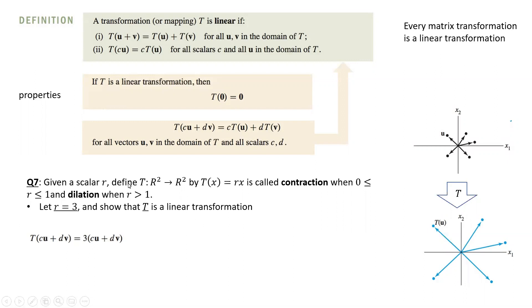By the definition of our transformation, T(x) equals rx. If we apply this transformation, all we do is take whatever is inside the parenthesis for transformation and multiply it by the number three.